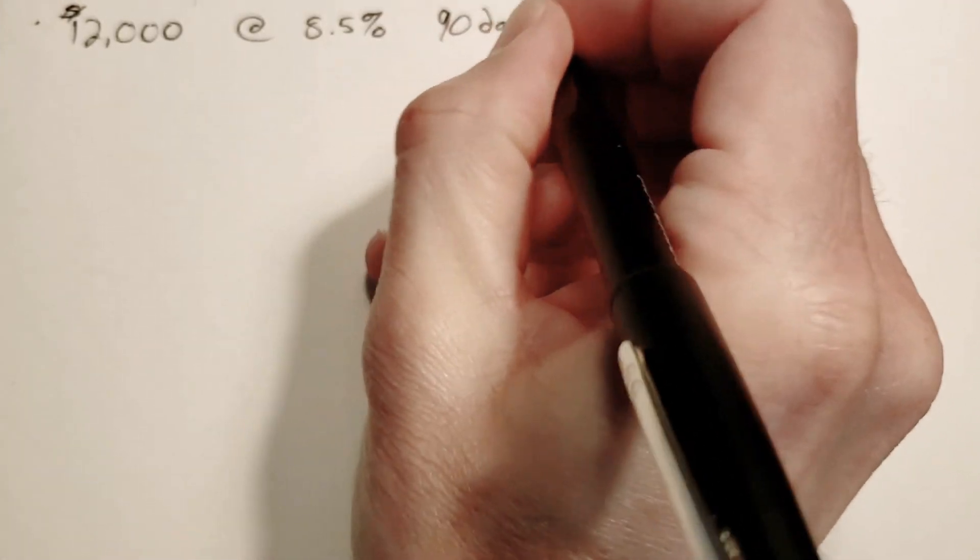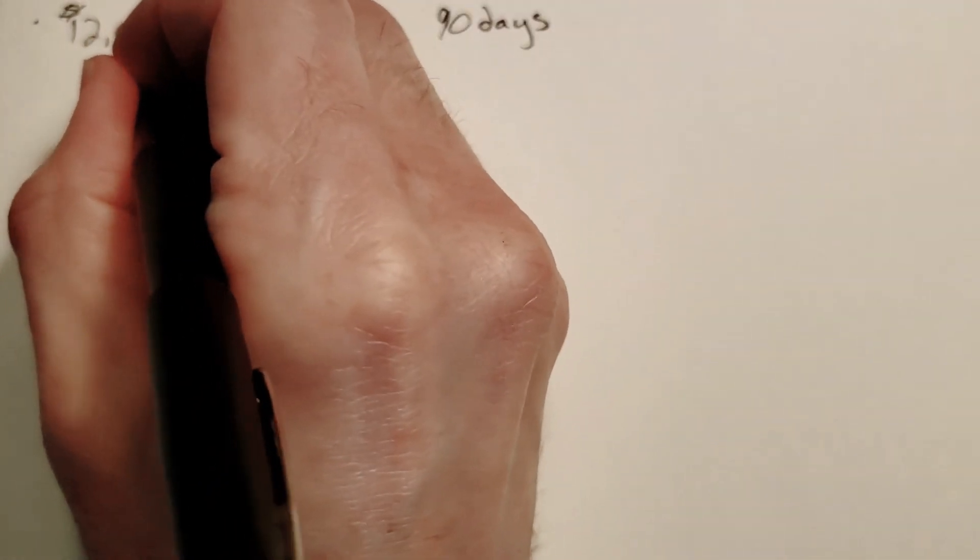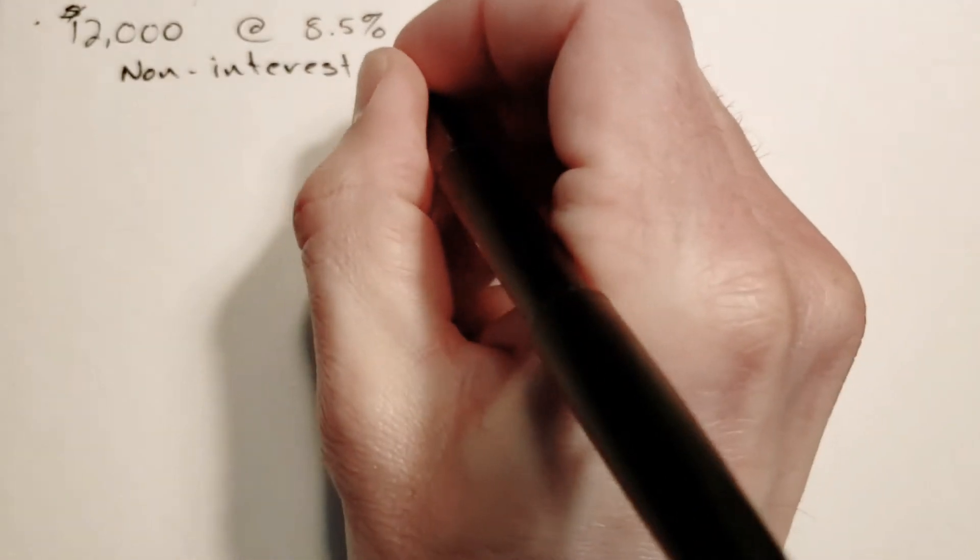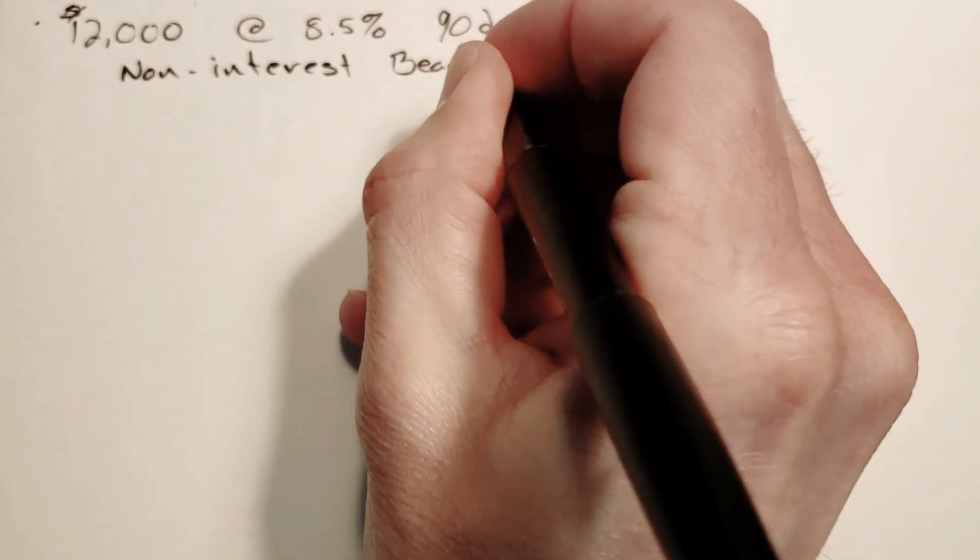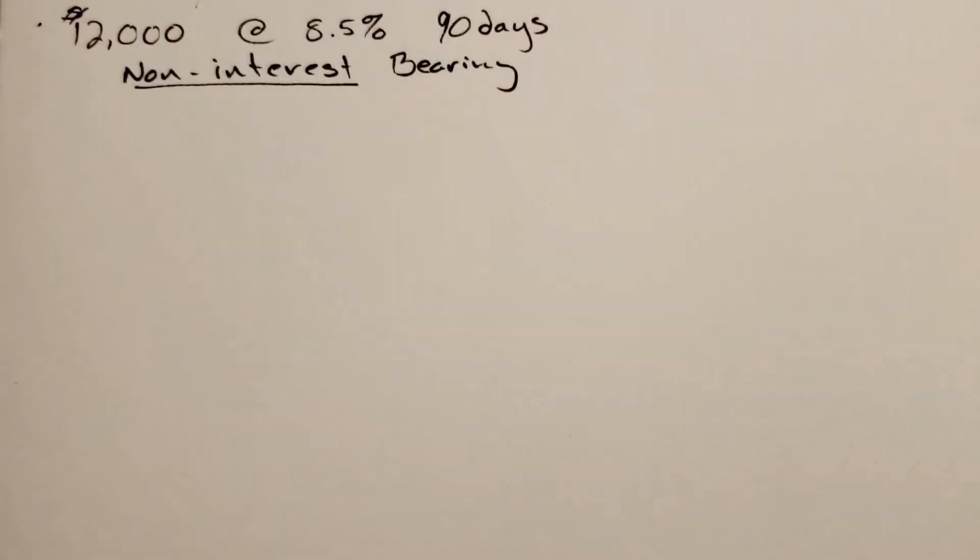The key word here is that it says non-interest bearing. As soon as you see this, it means it's different from what we did in the previous unit or chapter.